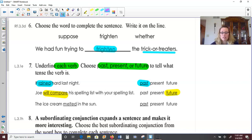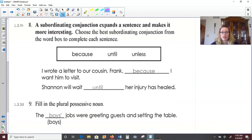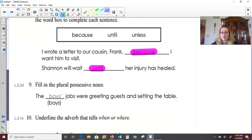The ice cream melted in the sun. What did the ice cream do? It melted. And that would mean it's in the past tense. It already happened. That would be very sad, too. Number eight. A subordinating conjunction expands a sentence and makes it more interesting. Choose the best subordinating conjunction from the word box to complete each sentence. Because, until, and unless are our choices. I wrote a letter to our cousin Frank because I want him to visit. Shannon will wait until her injury has healed.